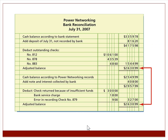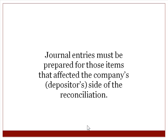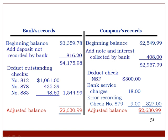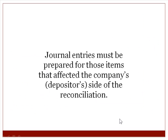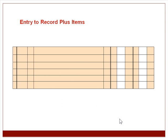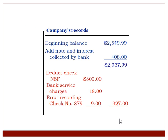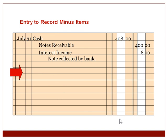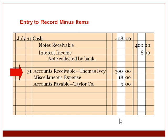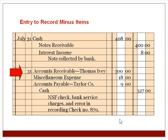Once the bank rec is complete, you need journal entries to record all the book-side items that weren't previously in your accounts. You record the note receivable collected with interest. Then you record the Thomas Ivey NSF check to miscellaneous expense and accounts receivable, the bank service charge, and the error correction for check number 879. You can combine the service charge, NSF check, and recording error into one journal entry.